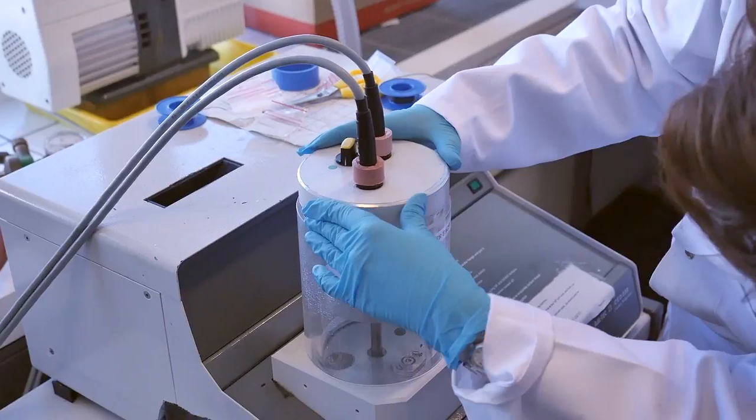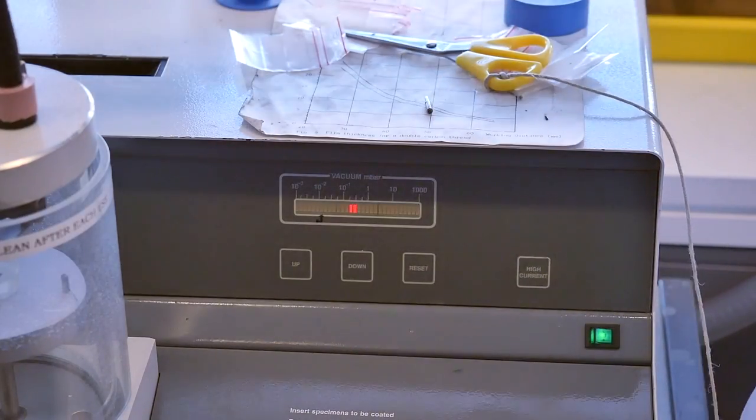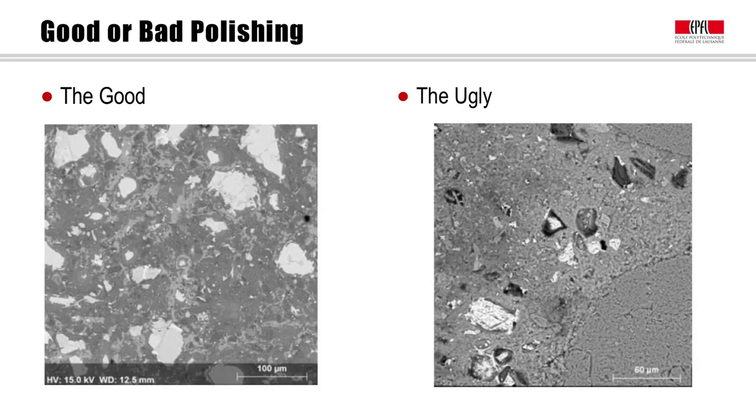Then, we adjust the height of the sample to get a carbon layer of approximately 10 to 15 nanometers. Finally, we put under vacuum the sample and we can apply high current to pulverize the carbon on the sample surface. Your sample is finally ready.